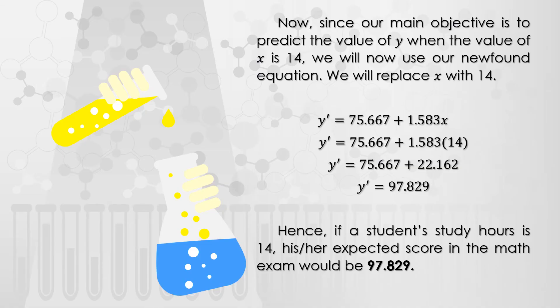Since our main objective is to predict the value of y where x is 14, we will use our newfound equation. We replace x with 14: y = 75.67 + 1.583 times 14. Multiplying, we get 22.162. Adding, y equals 97.829. Hence, if a student's study hours is 14, his or her expected score in the math exam would be 97.829.